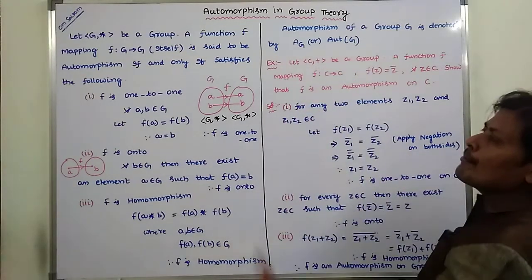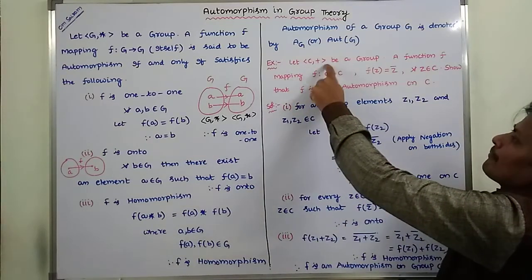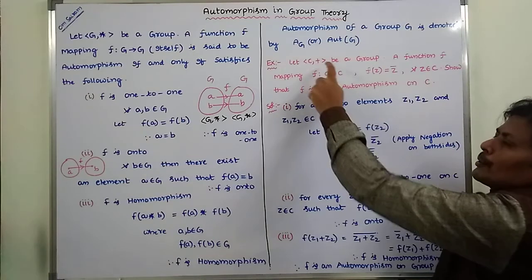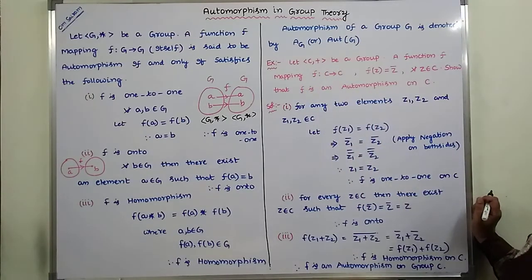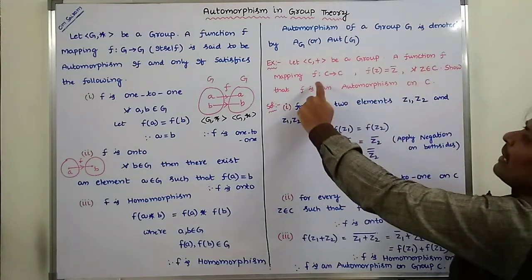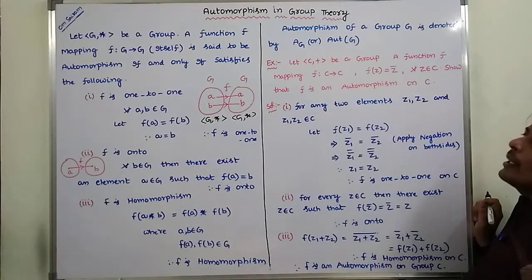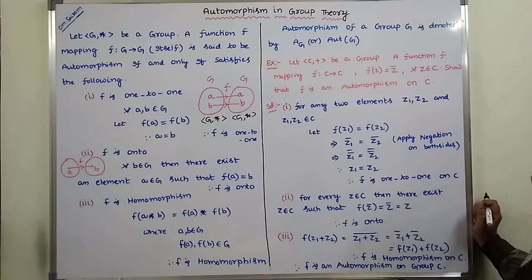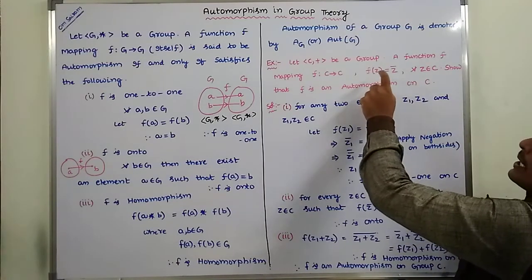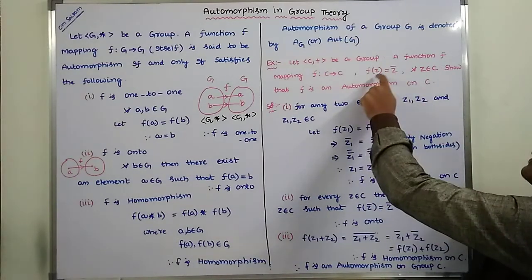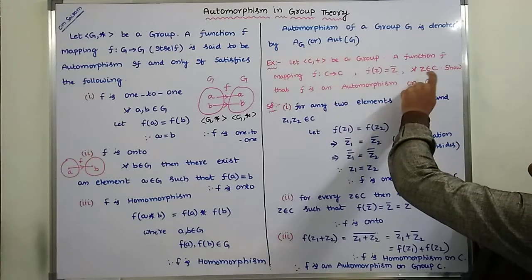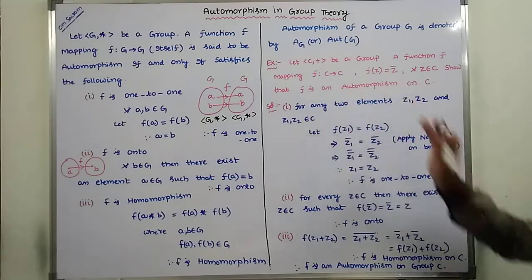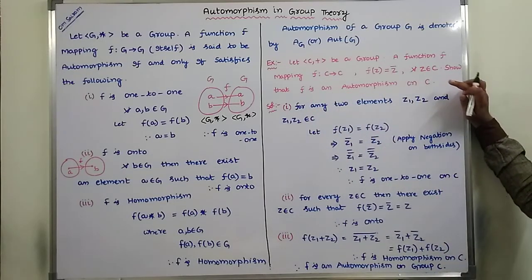Now here is an example for automorphism. Let (ℂ, +) be a group — ℂ is a group with respect to the operation plus. A function f mapping from ℂ to ℂ is defined by f(z) = z̄ for all z belonging to ℂ. Show that f is an automorphism on group ℂ.